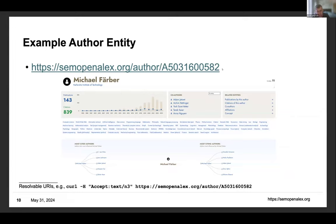One very nice thing about the RDF data model is that it is both human readable and machine readable. If we access a specific URI of an entity within SemOpenAlex — here the entity of my former colleague Michael Ferber — we will get a human-readable HTML interface with the most important metadata about this entity.